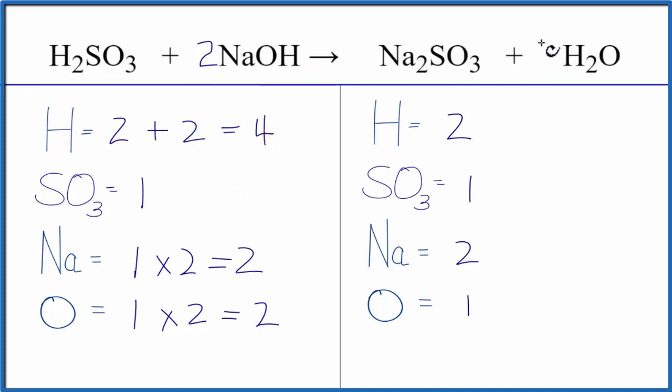If we were to put a 2 in front of the H2O, this 2 applies to everything. 2 times 2, that gives us 4 hydrogens, those are balanced. And then 1 times the 2 for the oxygen, that gives us 2, those are balanced and we're done. This equation is balanced.